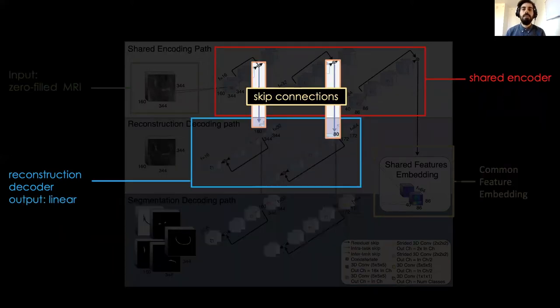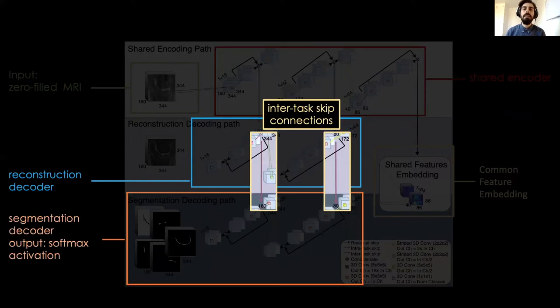The reconstruction decoder receives features from the encoder through skip connections. These support image denoising and facilitate reconstruction at high acceleration factors. The segmentation decoder presents what we call inter-task skip connections, which facilitate the flow of features among tasks.